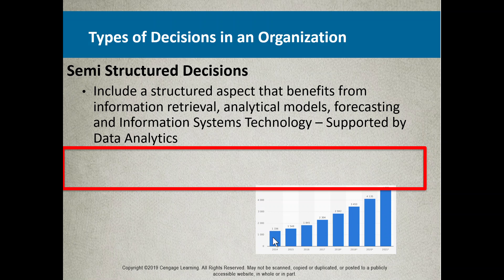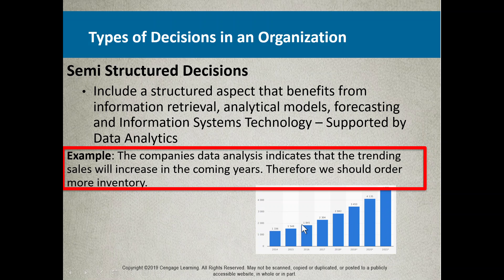Here's a chart showing variance data — how data is changing. Coming up into 2021, they may have forecasted what data is going to be based on other analytics. The company's data analysis indicates that trending sales will increase in 2021, and therefore they should order more inventory. That decision — 'therefore we should order the inventory' — sits right between semi and structured. The sales data is helping make the decision.